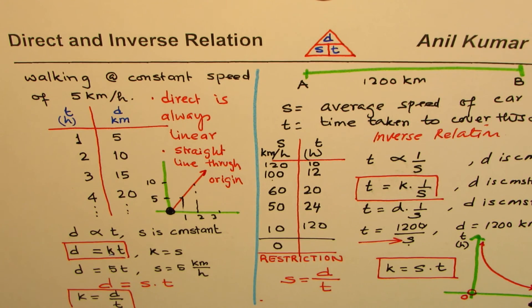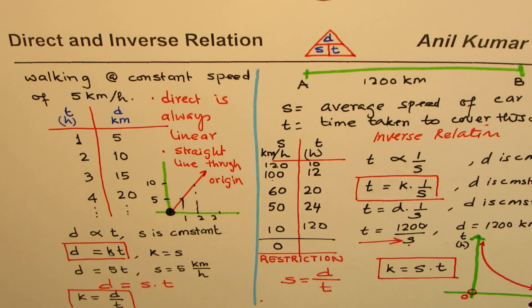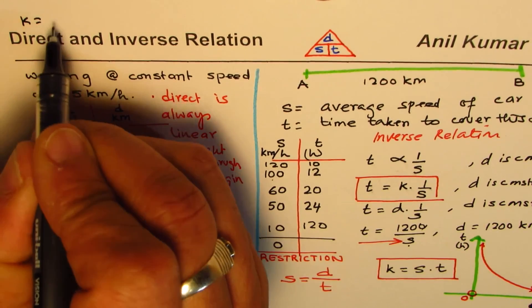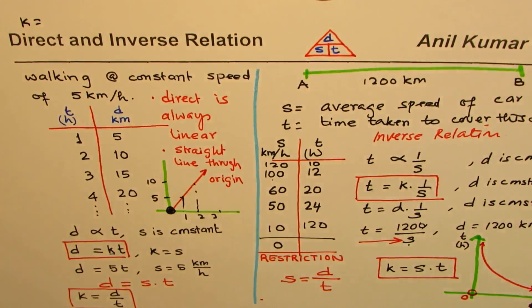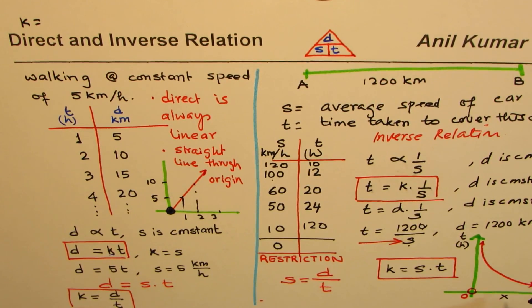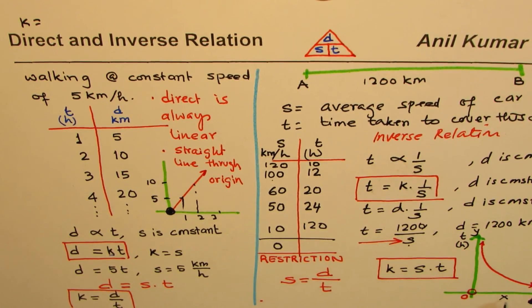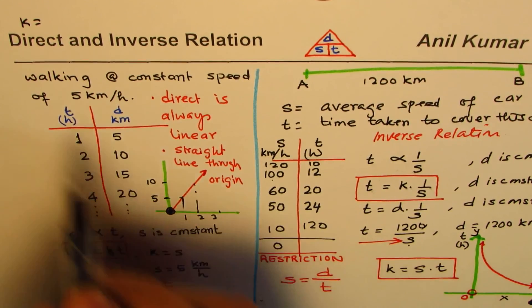I hope you now understand that direct relations can be represented by a constant K equals the ratio of two variables — normally we take x and y values, so K equals the ratio of x and y. That is how direct and inverse relations are linked.